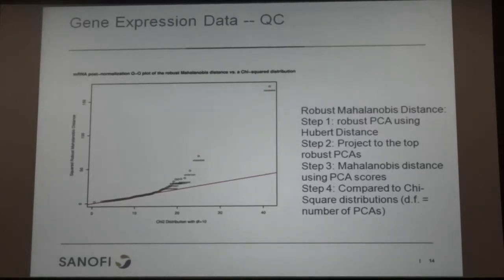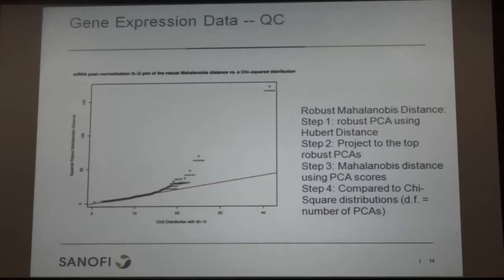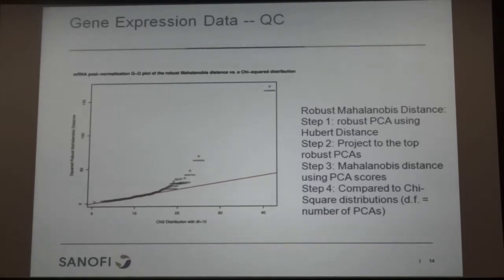There are various ways to choose how many principal components to keep — for example using model selection criteria, or simply keeping components that explain more than 80% of total variability. Then we calculate the Mahalanobis distance using those PCA scores. By projecting high-dimensional data into a lower dimension, we can use classical multivariate analysis. Based on statistical theory, if there are no outliers, all data points should follow a chi-square distribution with degrees of freedom equal to the number of principal components.